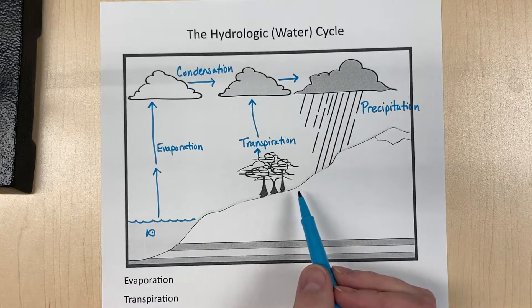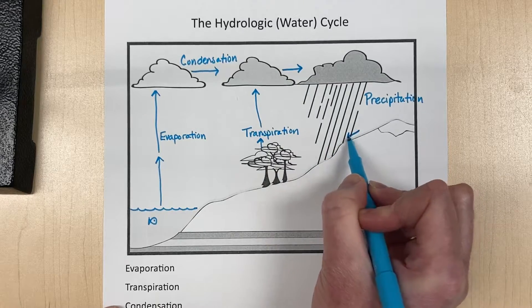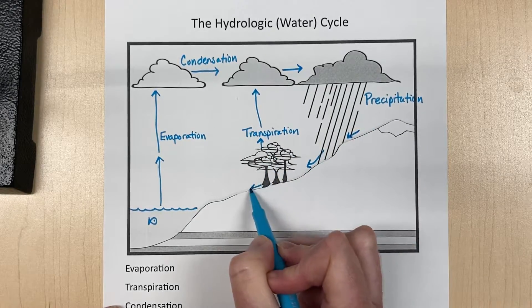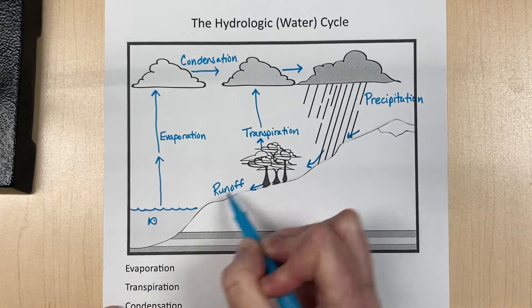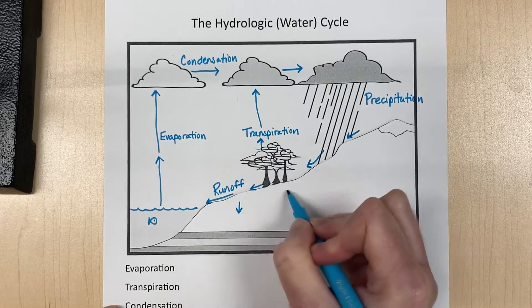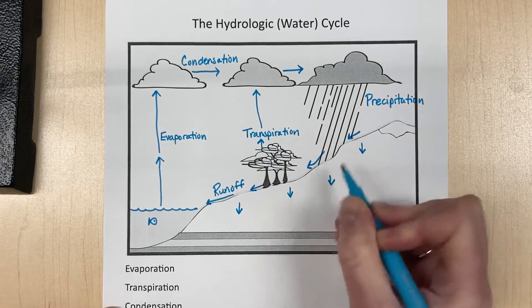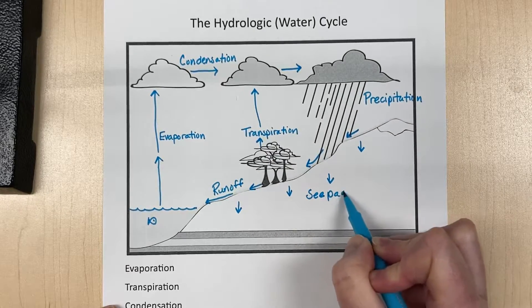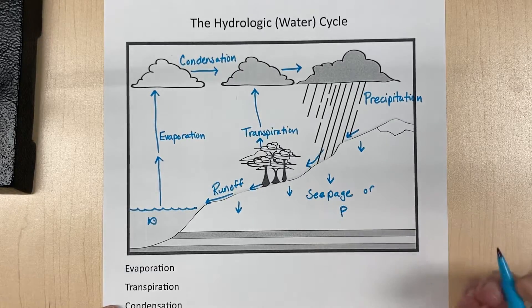Let's go back to the rain here. When things rain, some of the rain washes down the hill — that's called runoff. But some of it soaks into the ground, and this is called seepage. Sometimes it's called percolation.